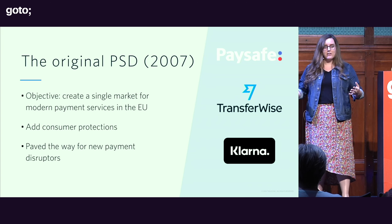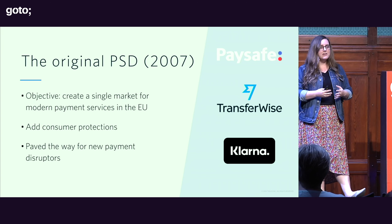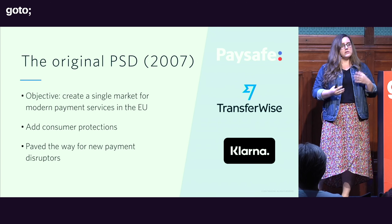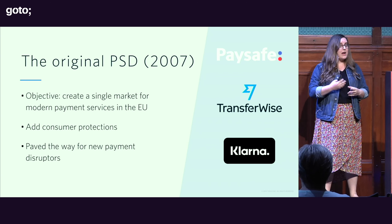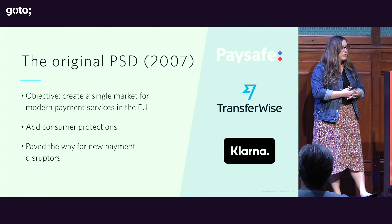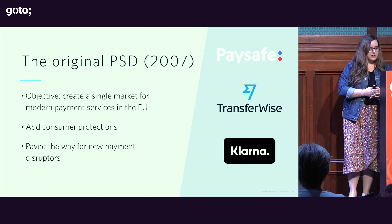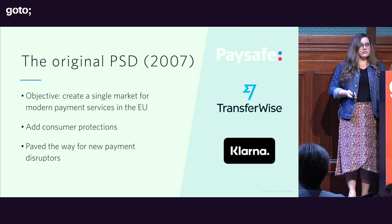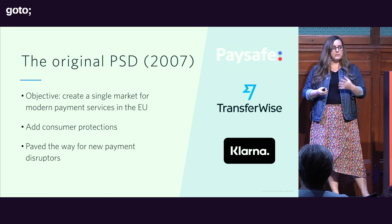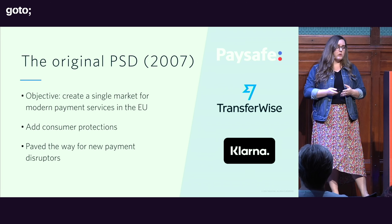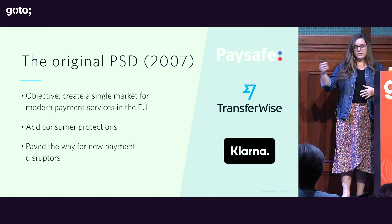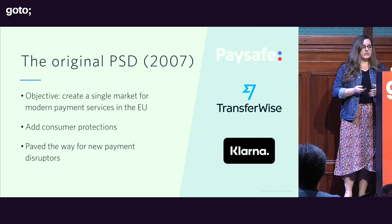That made it easier for companies like Paysafe, Transferwise, and Klarna — fintech startups able to do money transactions without being a bank themselves, accepting payments on behalf of retailers. With the right authorization, these third-party companies could become a payment institution and handle money on your behalf without becoming an actual bank.